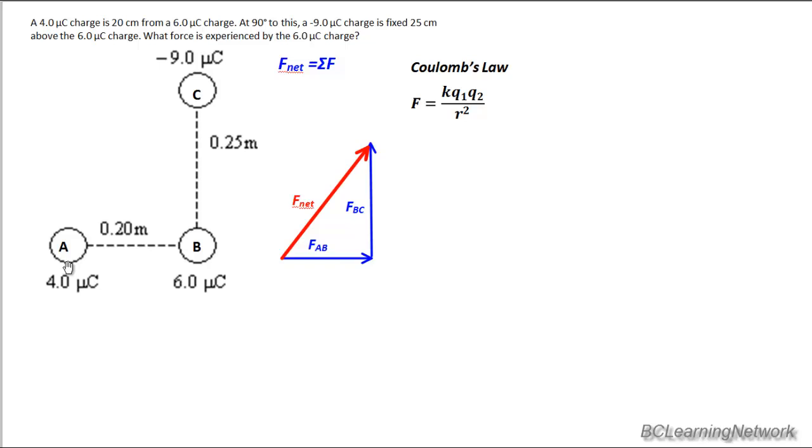Now we want to find out what FAB is. So we're going to label it appropriately. And simply put in Q1 is 4 microcoulombs and Q2 is 6 microcoulombs. R in this case would be 0.2 meters. So let's solve for FAB now.